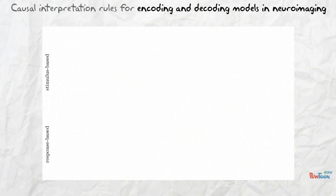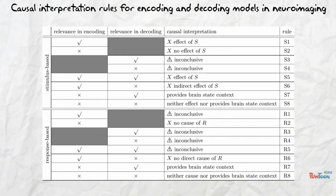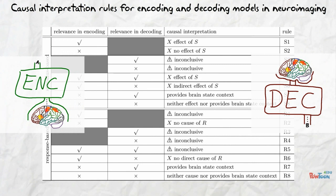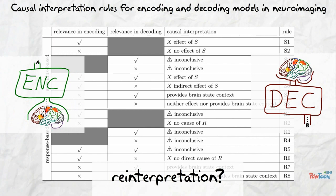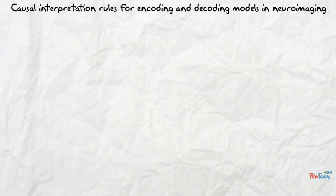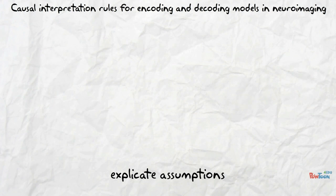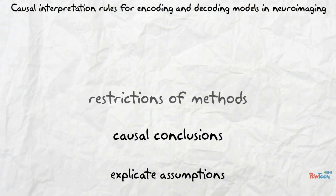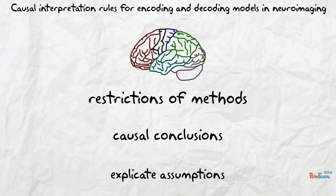Similar reasonings for both the stimulus and response-based settings, and for relevance or irrelevance in encoding or decoding, allow us to derive a set of simple interpretation rules. These serve as a guideline for the analysis of encoding and decoding models in neuroimaging, and may necessitate the reinterpretation of statements made in previous studies. In our opinion, it is important to explicate the underlying assumptions onto which the causal conclusions rely and to openly address the restrictions of the methods used — this is especially crucial when researching how the human brain works.